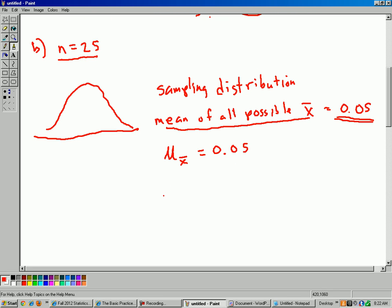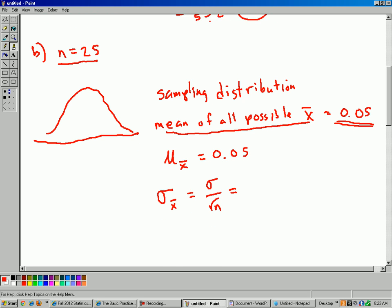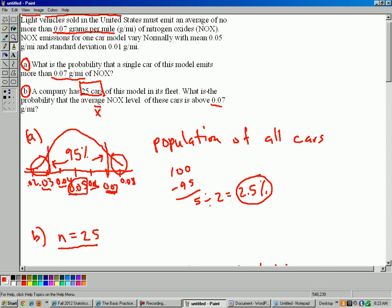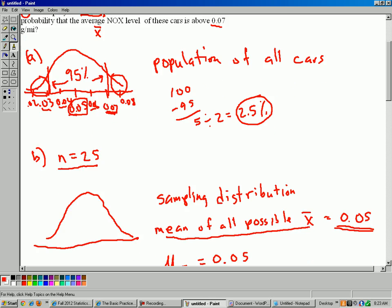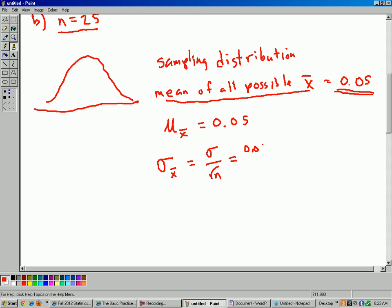Now, the standard deviation of all possible x-bars. So you could do standard deviation of all the possible x-bars, a little subscript there. That, we know, is sigma divided by square root of n. And sigma, in this case, is a standard deviation. And it tells us standard deviation is 0.01, right there. So that's 0.01 divided by square root of n.